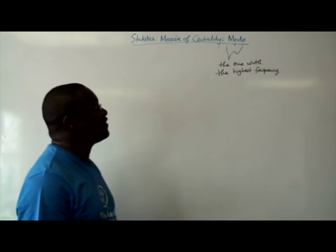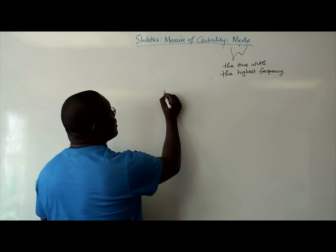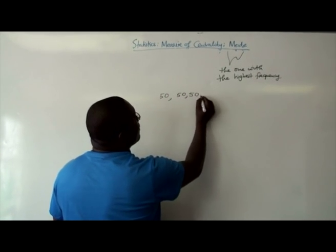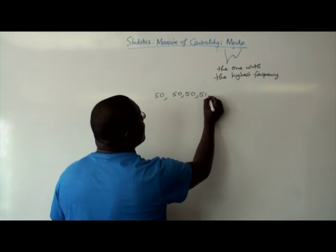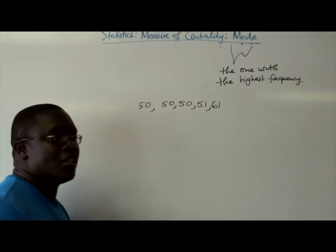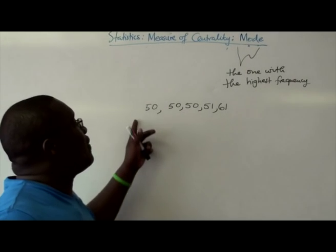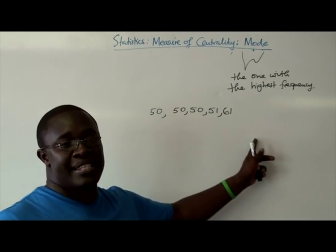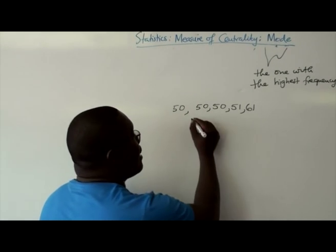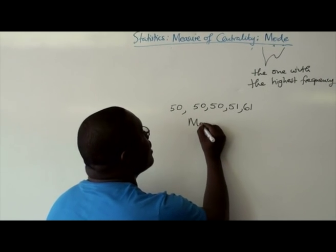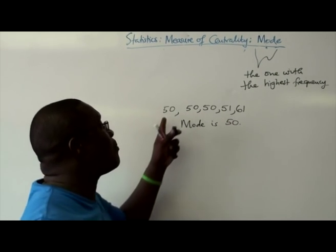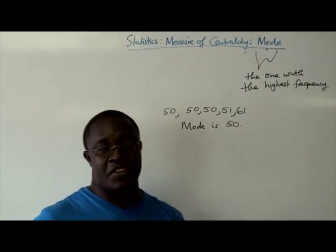Let's say in a class of five, the marks were as follows: the first one got 50%, the second one got 50%, the third one got 50%, the fourth one got 51%, and the last one got 61%. That means that the one with the highest frequency is 50%, so the mode is 50, because it's the one with the highest frequency.